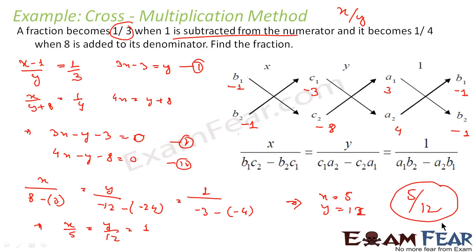What we have done: we taken the fraction to be x by y, written the equations (x minus 1) by y equals 1 by 3 and x by (y plus 8) equals 1 by 4. We solved these equations to get x equals 5 and y equals 12. That is why x by y is 5 by 12.